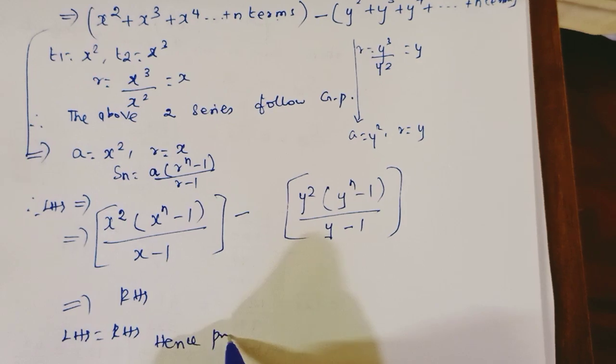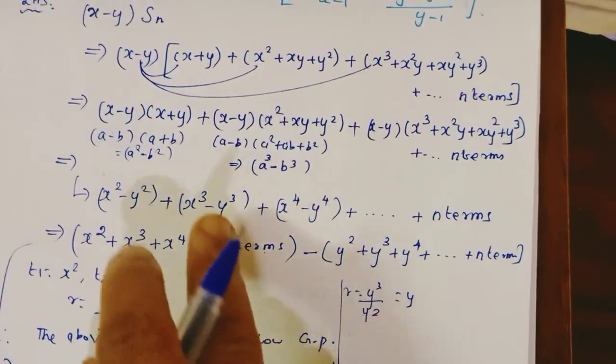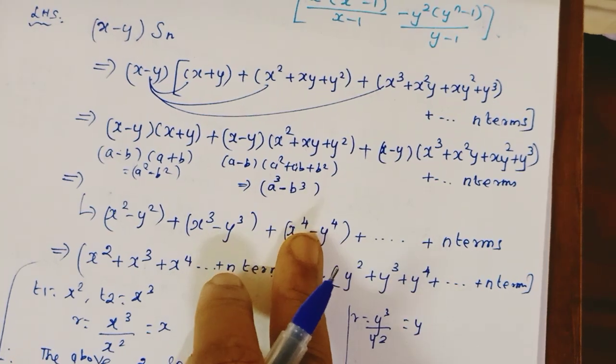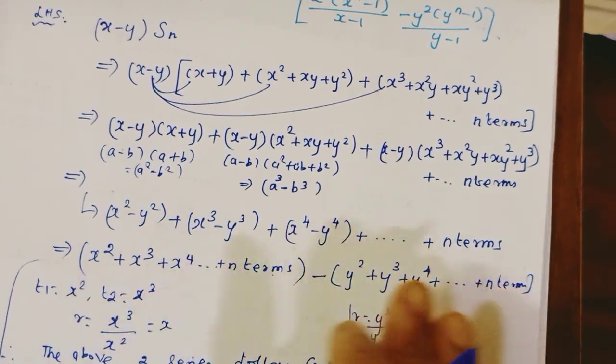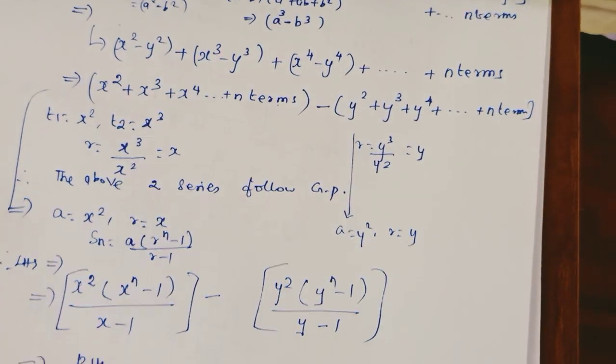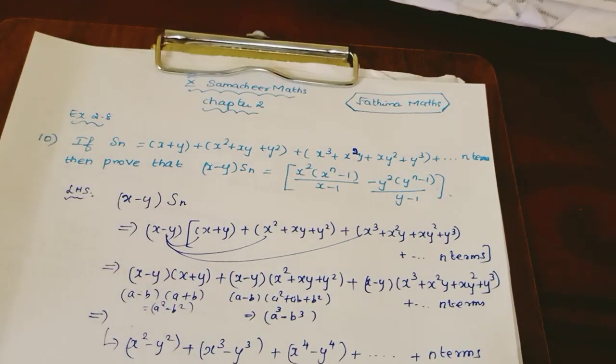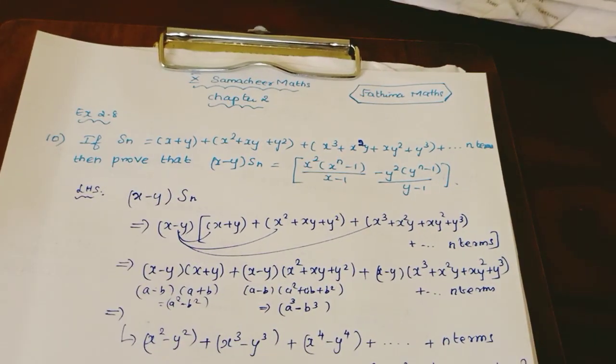So, if we use the identities, then we see GP follows. r equals x, we use the formula. Hence proved. Thank you students. Please watch and subscribe my channel.